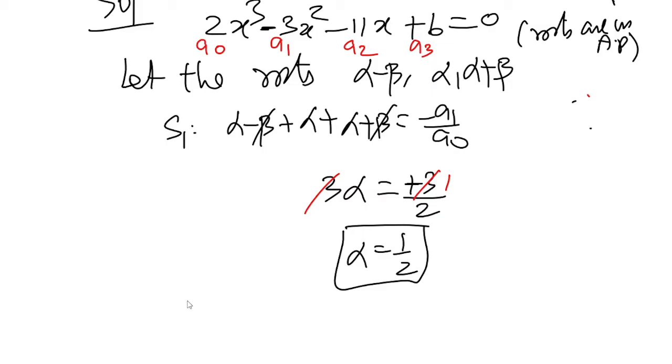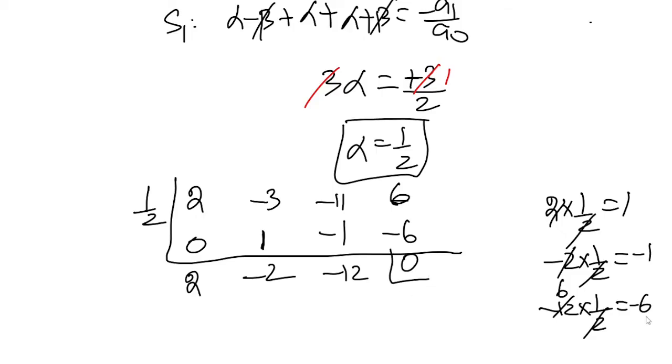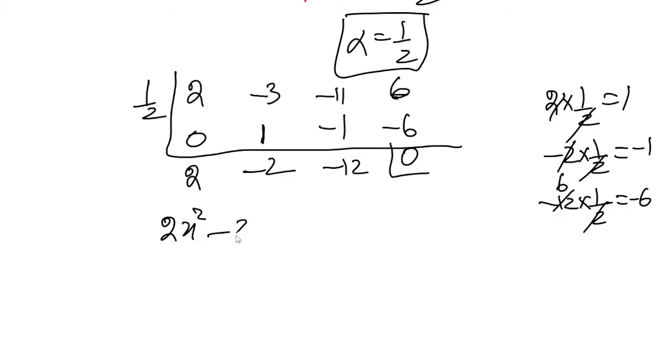Now divide the given equation by α. This gives 2x² - 2x - 12 = 0. Dividing all terms by 2, we get x² - x - 6 = 0.